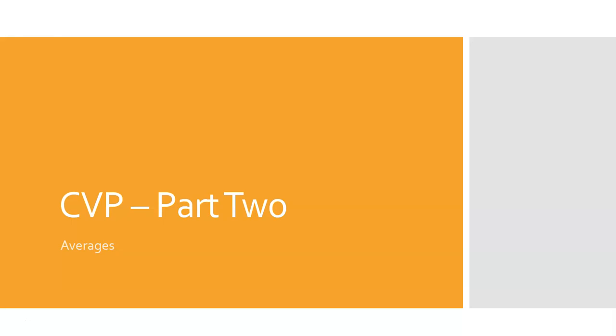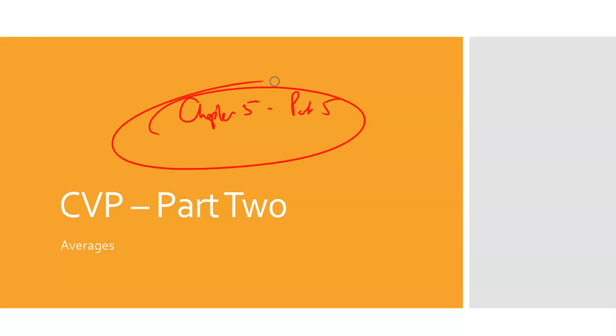Hi guys. So this is Chapter 5, Part 5, and this is the more interesting matter here, in that we're no longer talking about the one product. When we did one product, that was very much Level 4 — very much about what is breakeven.